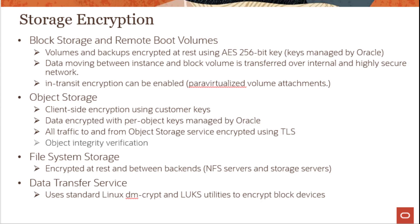Users can use IAM security policies to grant users and groups access privileges to buckets. To allow bucket access by users who do not have IAM credentials, the bucket owner can create a pre-authenticated request that allows authorized actions on buckets and objects for a specific duration. Alternatively, you can make a bucket public, which allows unauthenticated and anonymous access, though Oracle strongly recommends carefully considering the use case before making any bucket public.